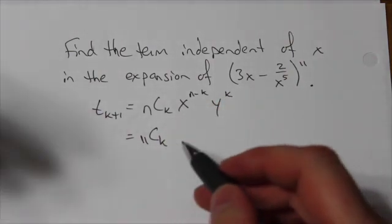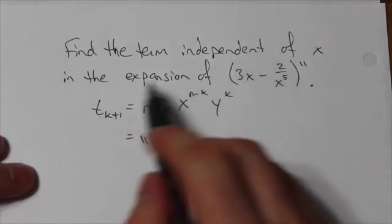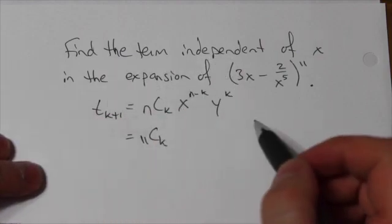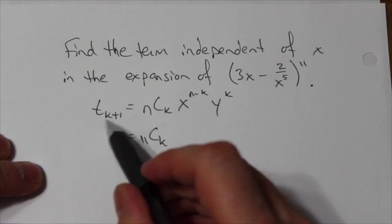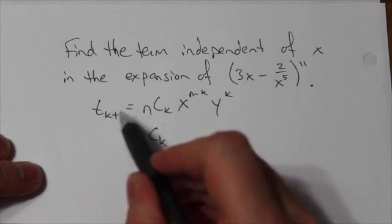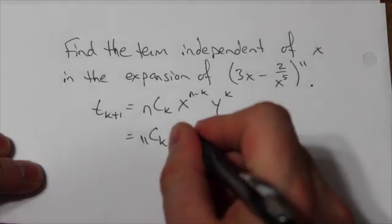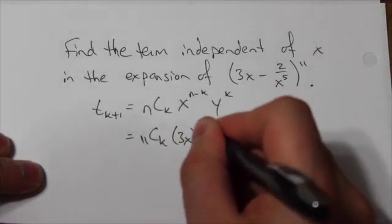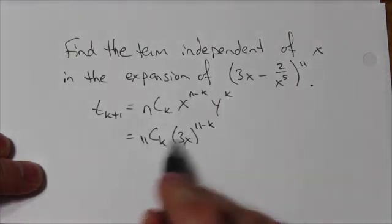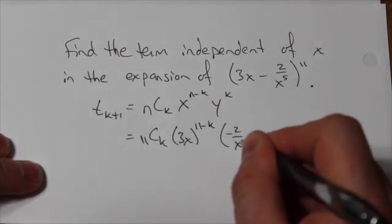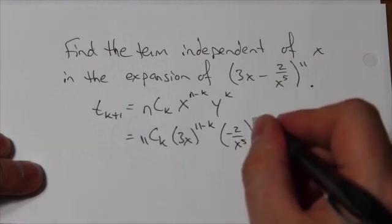I don't know k, and that really is the point. When I'm trying to look for the term, I'm going to find that term number. That's the k value. k is always going to be 1 less than the actual term value, but it's the k that I'm looking for. So in this case, this is going to be (3x)^(11-k) times (-2/x^5)^k.